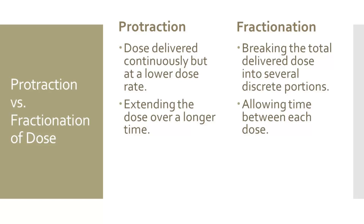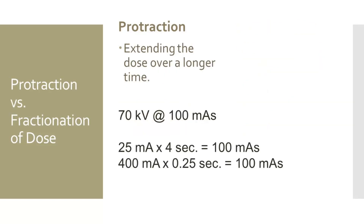To help understand the difference between protraction and fractionation, consider this example. Starting with protraction, a radiograph can be performed using 70 KV at 25 MA with an exposure of 4 seconds. The same projection could also be performed at 70 KV using 400 MA with an exposure of 0.25 seconds. The exposure with greater radiation effectiveness and potential harm would be 70 KV at 400 MA and 0.25 seconds, because the dose is delivered in a smaller time frame, leaving less time for cells to recover.